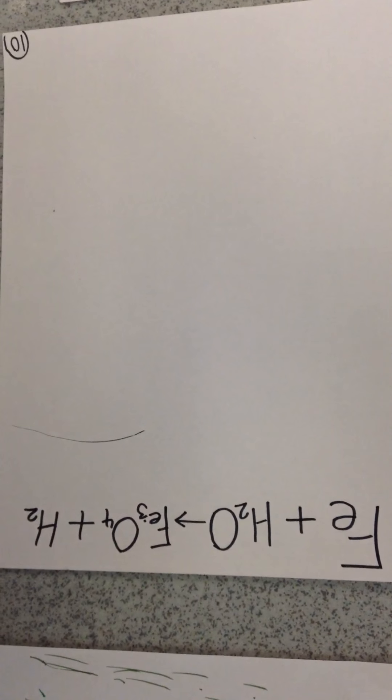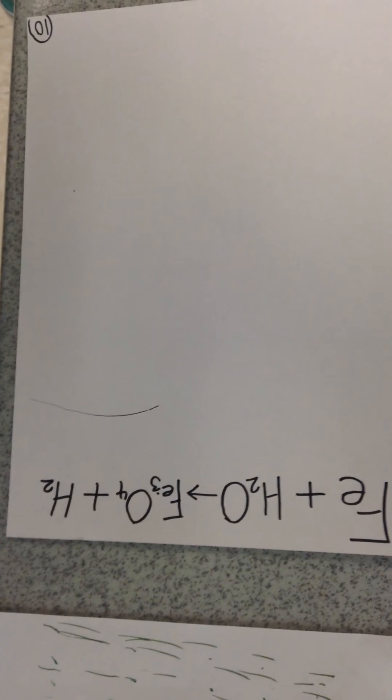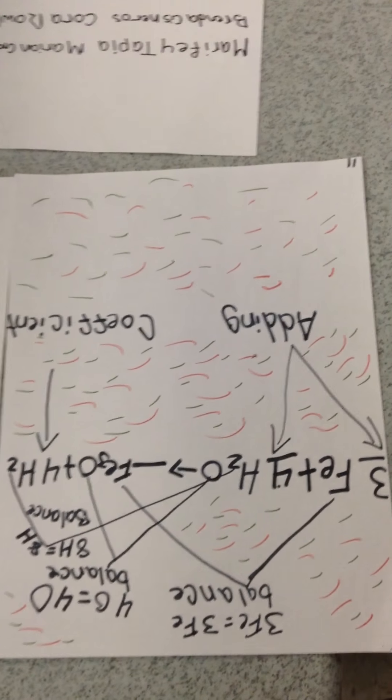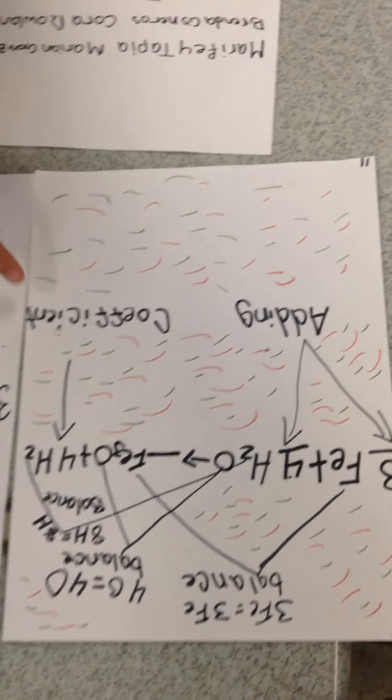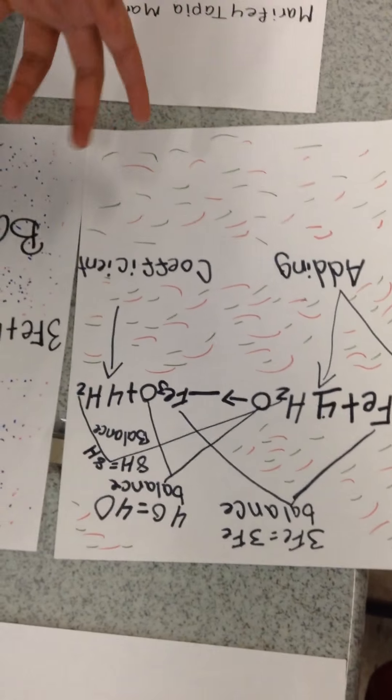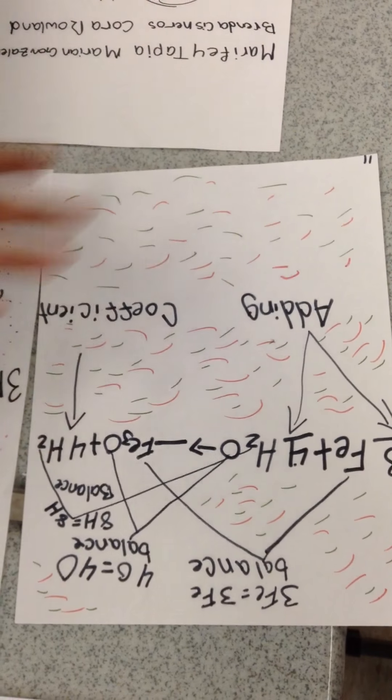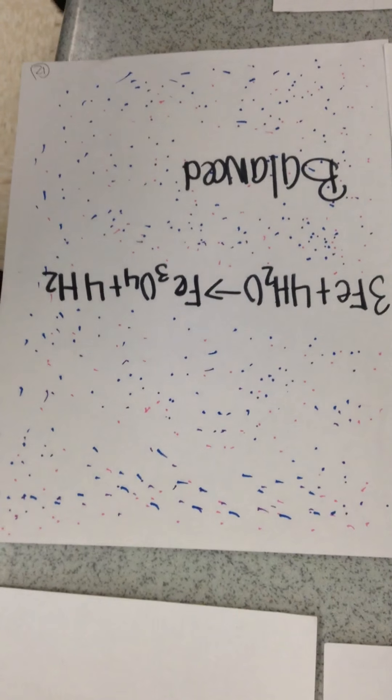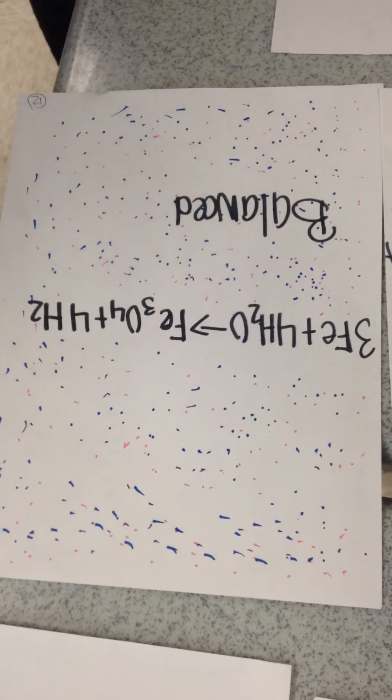Fe plus H2O goes to Fe3O4 plus H2. Oh, 3Fe equals 3Fe, balanced. Over here you add and then you balance the equations. 3Fe plus 4H2O equals Fe3O4 plus 4H2, and it's balanced.